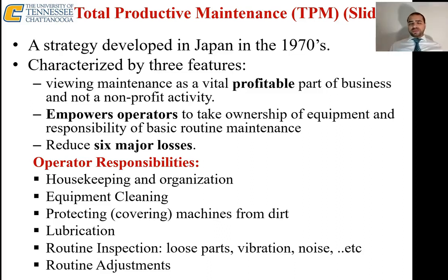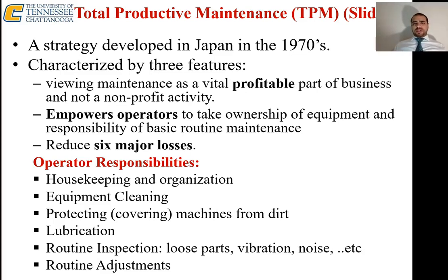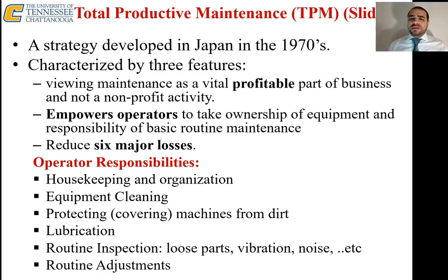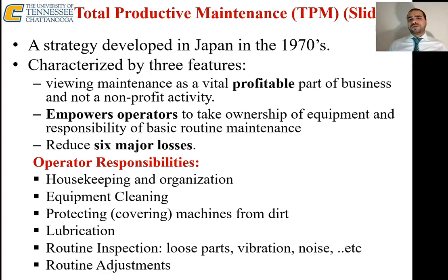Total Productive Maintenance (TPM) is a strategy developed in Japan. It is one of the lean manufacturing sub-strategies. TPM has three key features. The first is that it views maintenance as a profitable part of business and not a non-profit activity — maintenance actually saves you a lot of money, so it generates income and is not just a cost.